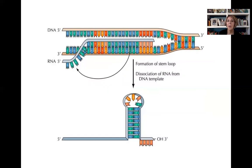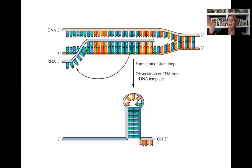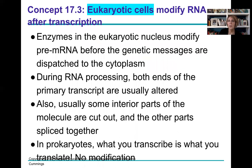Here again we have a cartoon of that polyadenylation signal and the hairpin turn that forms from base pairing on the messenger RNA. That stops the RNA polymerase from doing any more transcription, and it falls off the DNA. This is all happening in the nucleus of the eukaryote.